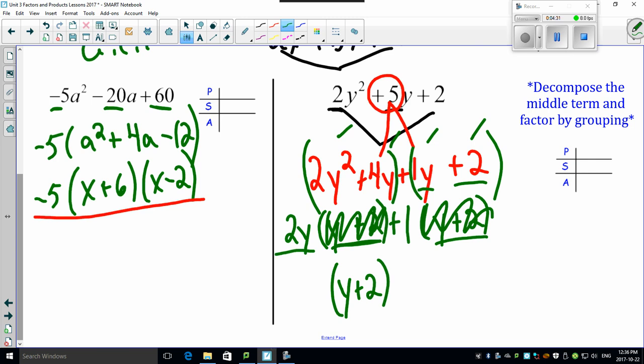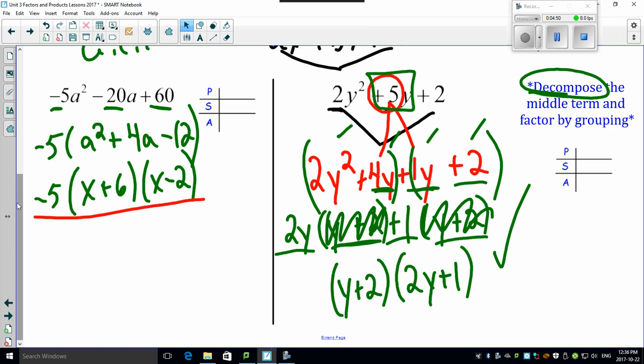There's the two common factors (y + 2). Take those out, and look what you have left: (2y + 1). Isn't it amazing how that works so beautifully by a method called the decomposition method, where you decompose the middle term to give you these guys so that you can group factor. I think it works incredibly splendidly well. Stay tuned for more podcasts and examples.